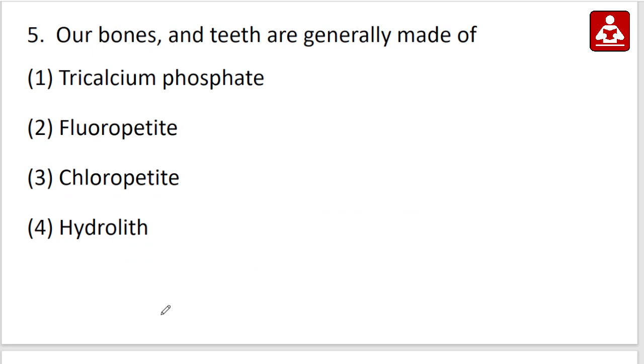Our bones and teeth are generally made of. Option 1 Tricalcium phosphate, Option 2 Fluoropetite, Option 3 Chloropetite, Option 4 Hydrolith. Option 1 is your right answer.